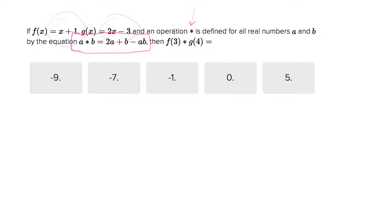So f of 3, what we want to do is take the 3 and make that the input on the f function. So let's put a 3 in for wherever there's an x. So take the f function, and let's put a 3 in for every x. So we get f of 3 equals 3 plus 1.